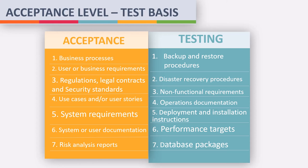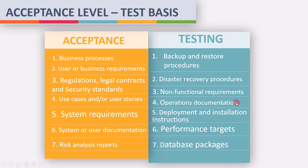These were the different requirements for acceptance testing. You can categorize them into groups: requirements (business, user, use cases, user stories, or system-level); standards (regulations, security, or legal); installation-related (recovery, backup, disaster recovery, installation); and non-functional requirements (like performance targets). If you know the objective of the test level, it will be easy to remember these requirements.